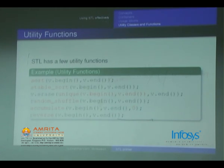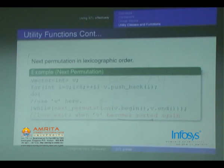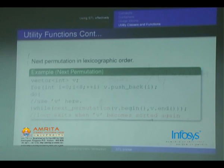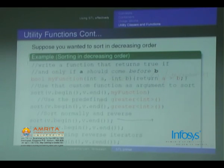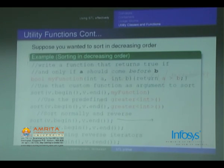`random_shuffle`. `accumulate(v.begin(), v.end(), 0)` will sum up all the elements of the array. `reverse(v.begin(), v.end())`. To generate all permutations of a given sequence, first sort it, then use `do { ... } while (next_permutation(v.begin(), v.end()))`. Inside each loop iteration you will have a permutation of the initial sequence. For sorting with a custom comparator, define `bool myFunction(int a, int b)` and then use `sort(v.begin(), v.end(), myFunction)` to sort in descending order.